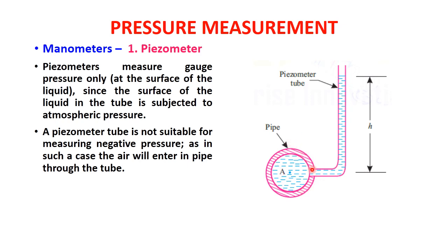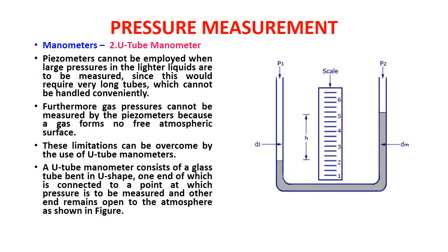The piezometer uses only the liquid whose pressure is to be measured, giving the pressure value. It is used only for measuring gauge pressure and cannot measure vacuum pressure. Various piezometers can be employed on different pipe sections to find the intensity of pressure at particular points. The height of liquid in the tube gives the value of the pressure head.